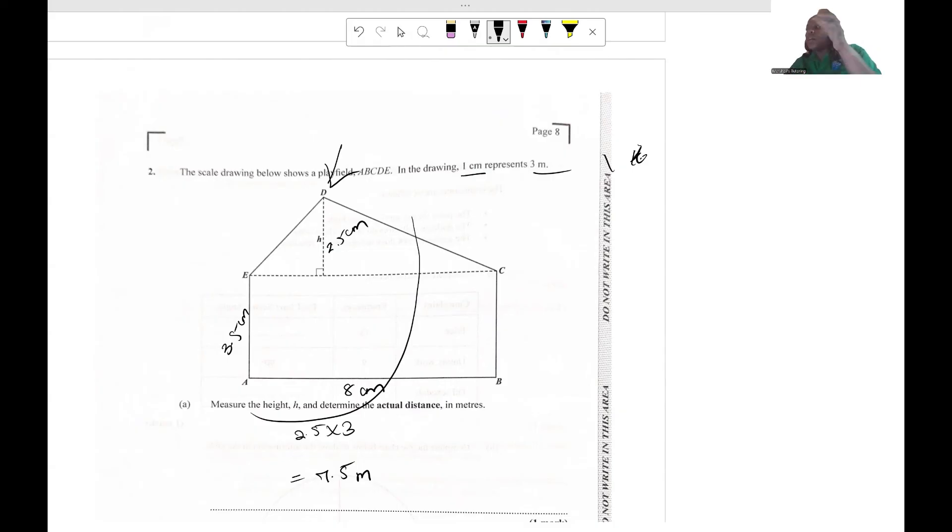Then without adjusting the distance of the compass that you currently have, whatever distance it's currently open at, keep that distance and place the pointy part at point B and draw another arc.